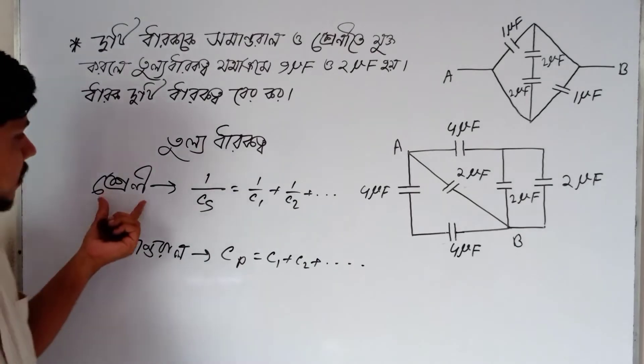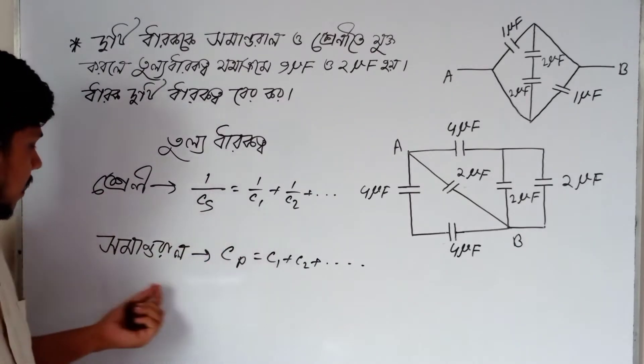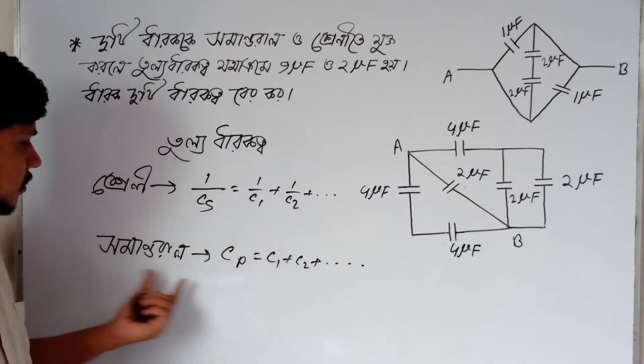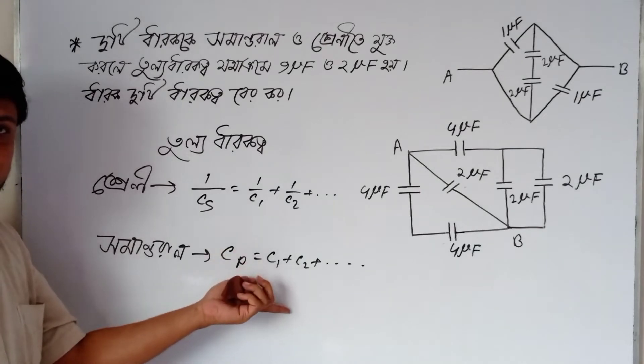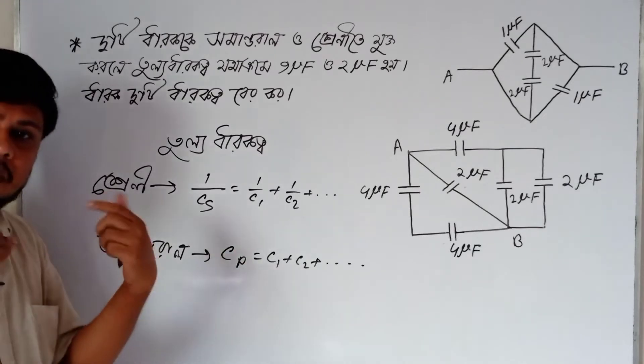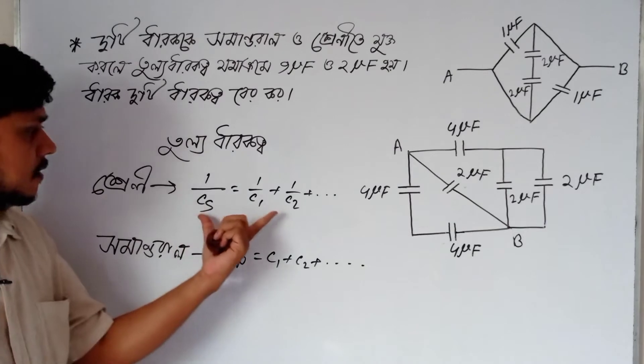That means, for series combination the formula is 1/Cs, and for parallel combination the formula is Cp. So, for parallel combination you need to add them up. If there is a series combination, apply the series formula.